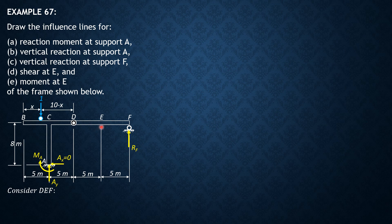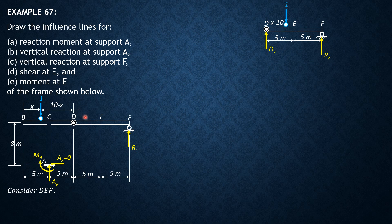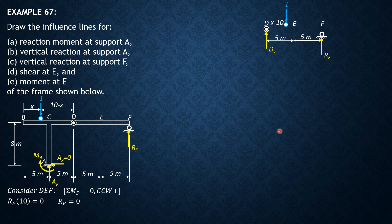Consider the free body diagram of segment DEF. When the unit load is between 0 and 10 meters (B to D), it is not on this segment. The load's distance from B is x, and since D is at 10 meters, its distance from D is x minus 10. Taking summation of moments about D equals zero (counterclockwise positive): RF times 10 equals zero, so RF equals zero for 0 ≤ x ≤ 10 meters.